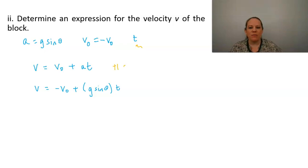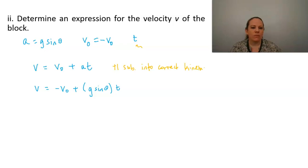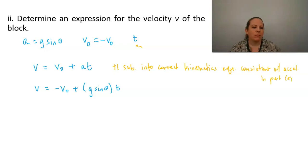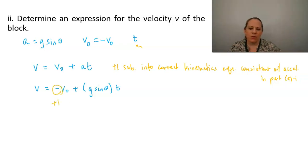We get a point for substitution into a correct kinematics equation consistent with our acceleration in part one, and a second point for the correct sign on the initial velocity.